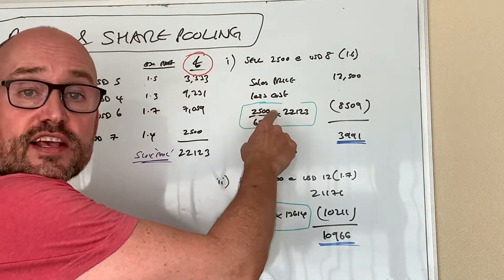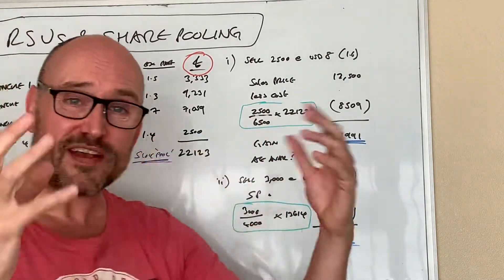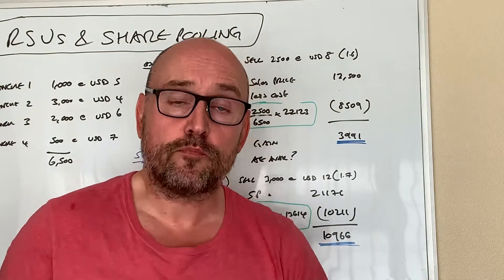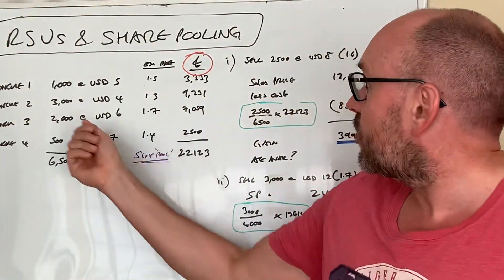That is how you do it. Number of shares gone over what you started with times the cost of the pool to basically attribute the cost of the shares that he's offloaded.